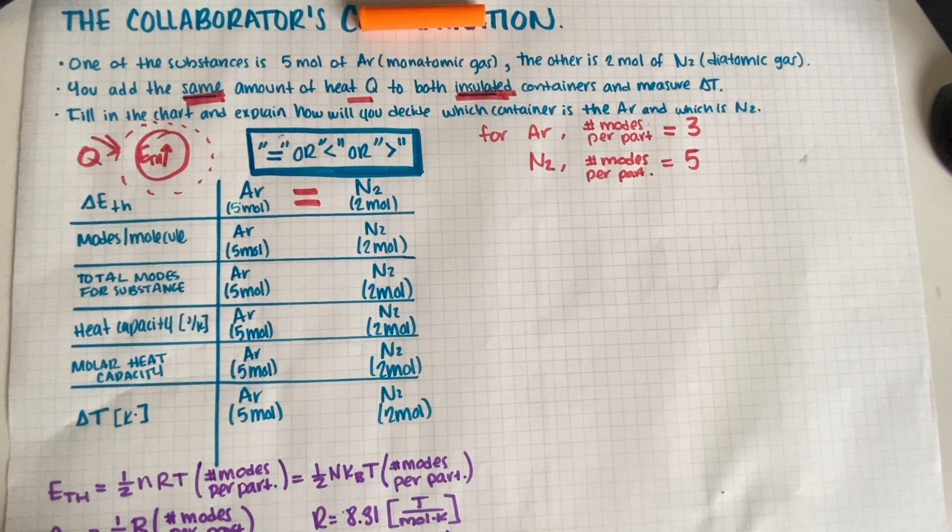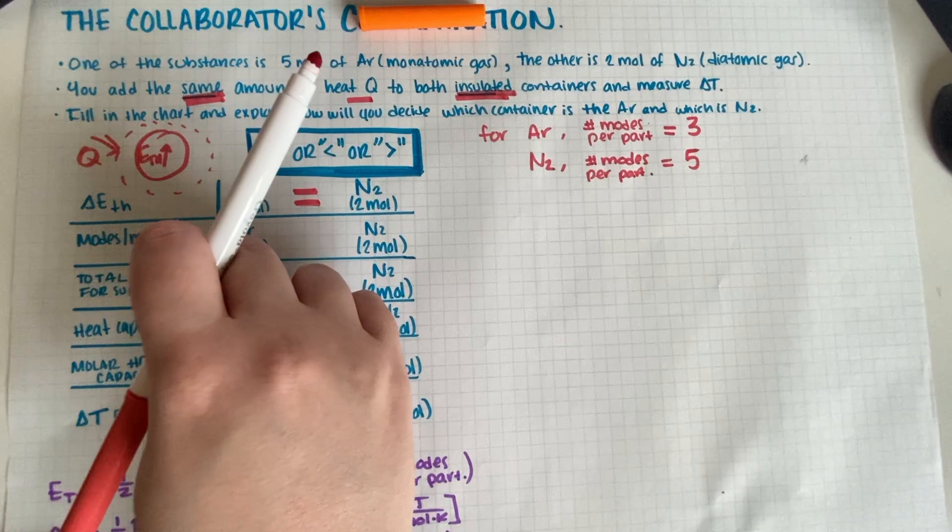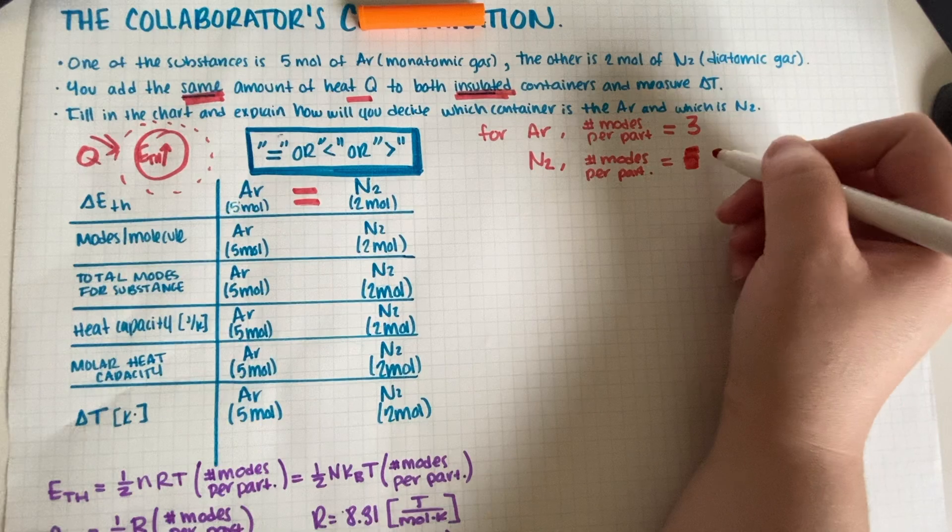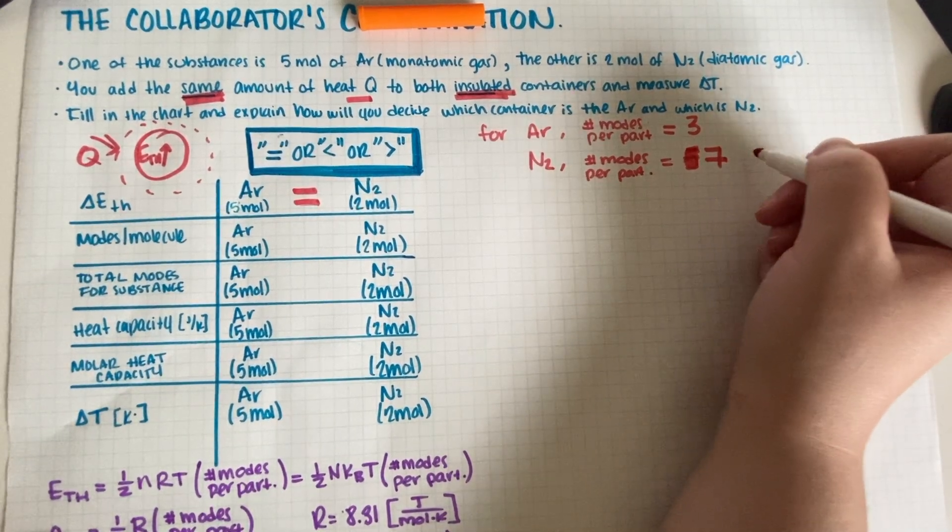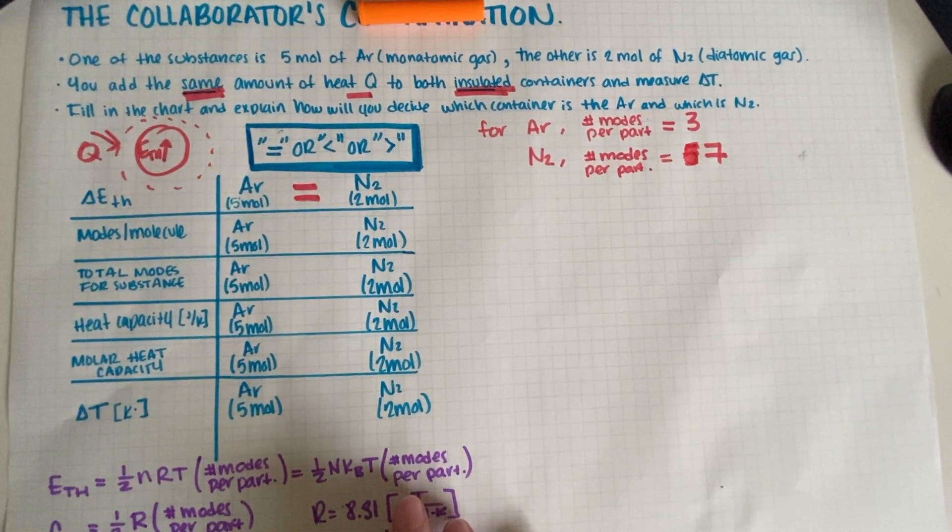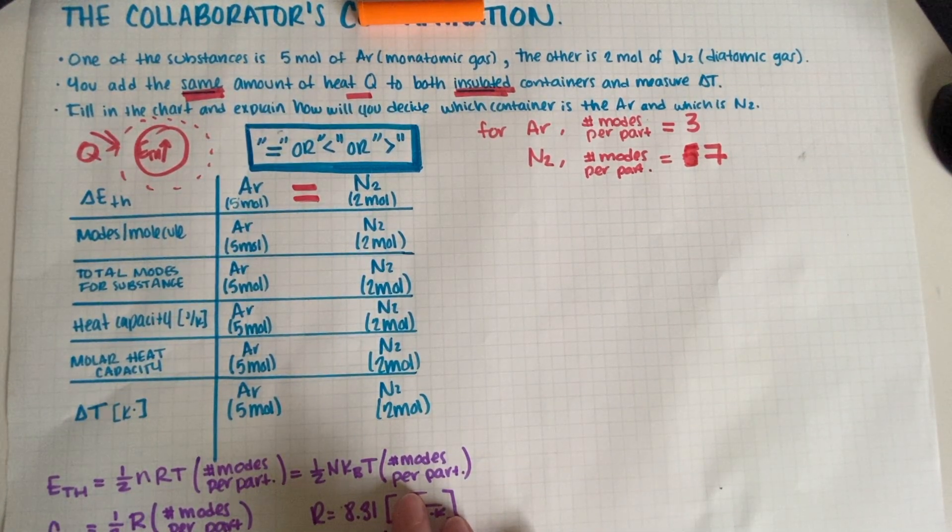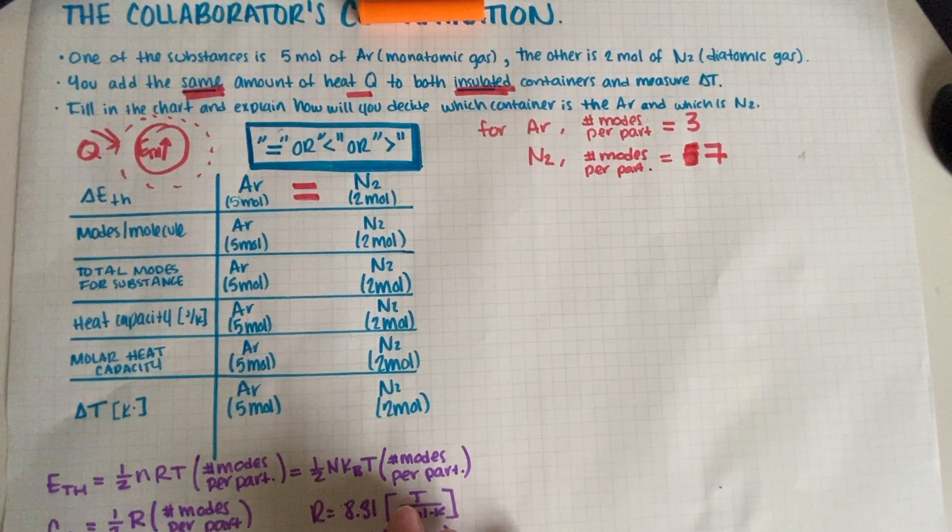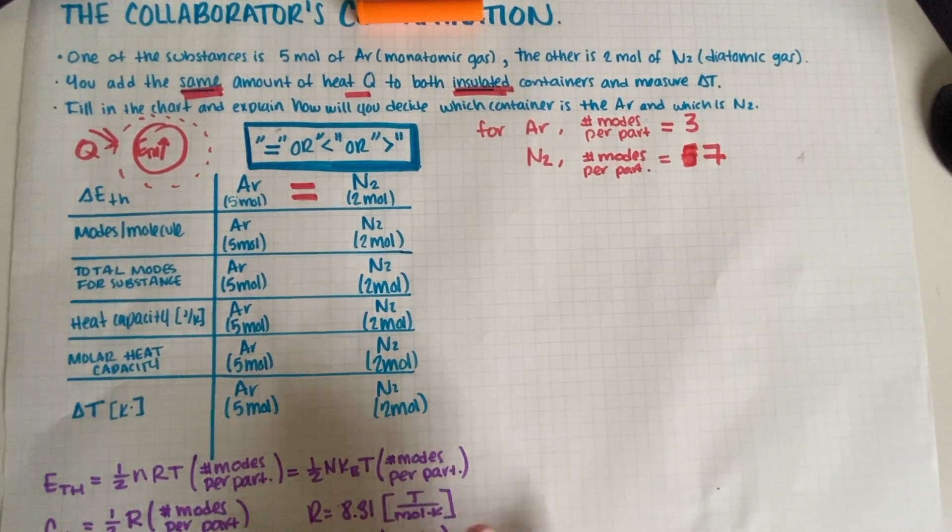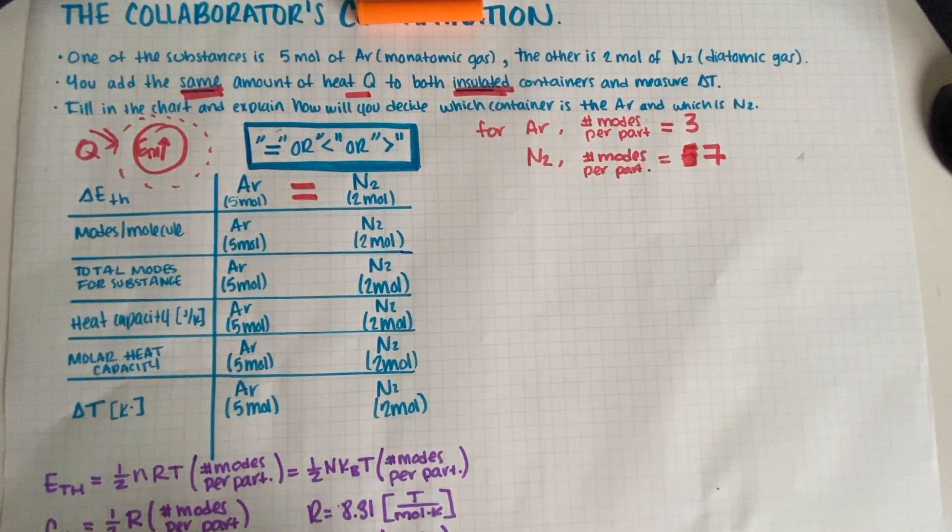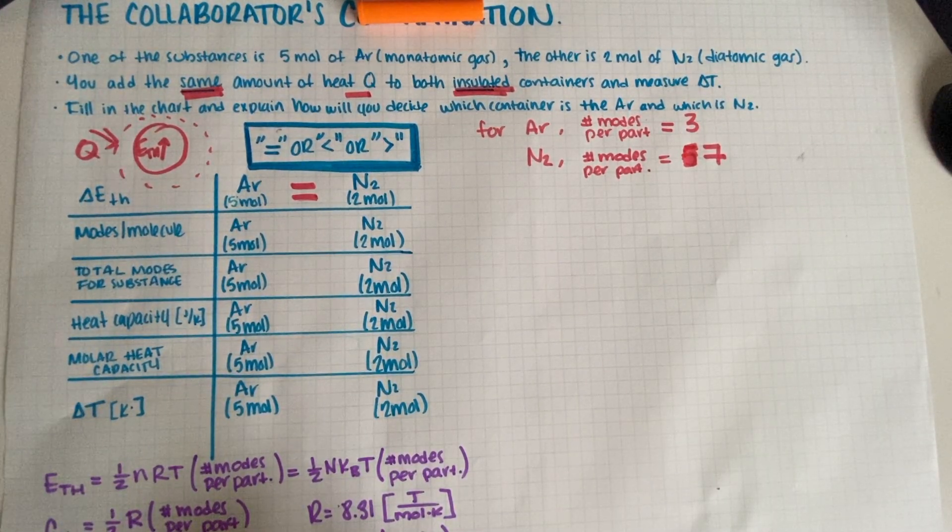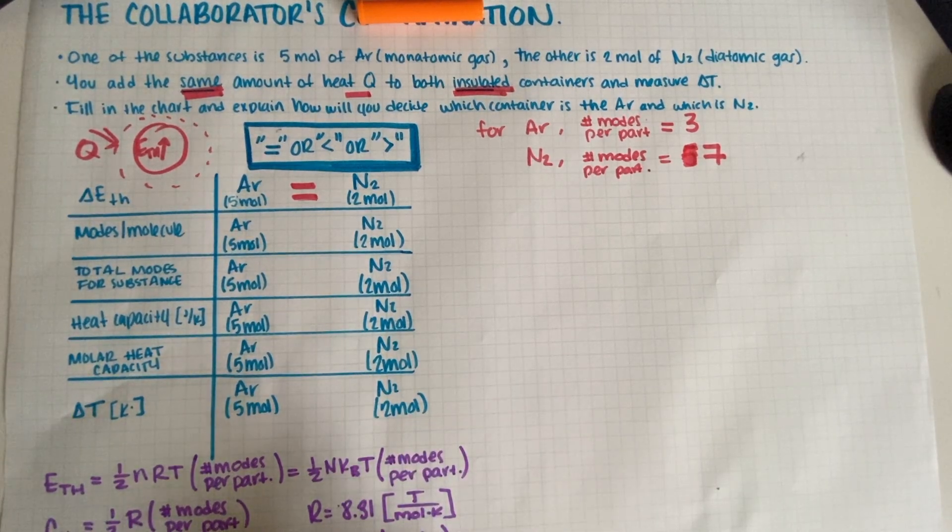So now in terms of modes per molecule, I think I went ahead and already answered that question. This is diatomic and this is monatomic. Oh wait, why did I say five? I'm sorry, this should be seven because the problem isn't really saying if all the modes are active or if this is room temperature. I think we can just assume that all of them are active.